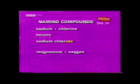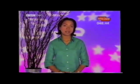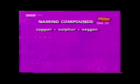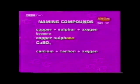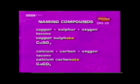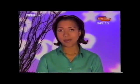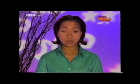Rule two is with three or more elements — a metal, a non-metal and oxygen. Here, the non-metal changes to something -ate. For instance, the elements copper, sulphur and oxygen combine to become copper sulphate, CuSO4. And calcium, carbon and oxygen atoms combine to make calcium carbonate, CaCO3. A particular problem is mixing up -ides and -ates. Remember: -ides are when two elements are joined together; -ates are when three or more are joined together and one of the elements is oxygen.